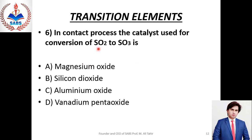Next question No. 6: In the contact process, the catalyst used for conversion of SO2 to SO3 — جب ہم sulfuric acid بناتے ہیں contact process میں، sulfur dioxide کی oxidation کر کے اسے sulfur trioxide میں convert کیا جاتا ہے، اس وقت catalyst use ہوتا ہے vanadium pentoxide۔ Right option is Delta. ایک اور process ہے lead chamber process، جہاں اسی reaction کے لیے nitric oxide gas کو catalyst کے طور پر use کرتے ہیں۔ Lead chamber process میں nitric oxide اور contact process میں vanadium pentoxide۔